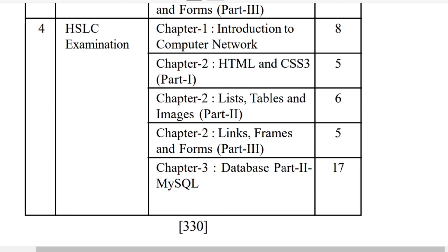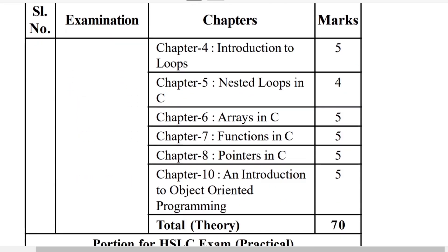The next chapter is C Programming. C Programming chapter marks are: 4 marks, 5 marks, 4 marks, 6 marks, 7 marks, 8 marks, 5 marks. I am going to talk about the whole section covering 5 marks, 6 marks, 9 marks, 4 marks, 5 marks, 8 marks, 7 marks, 5 marks, 6 marks, 7 marks, 7 marks, 8 marks, 7 marks, etc.